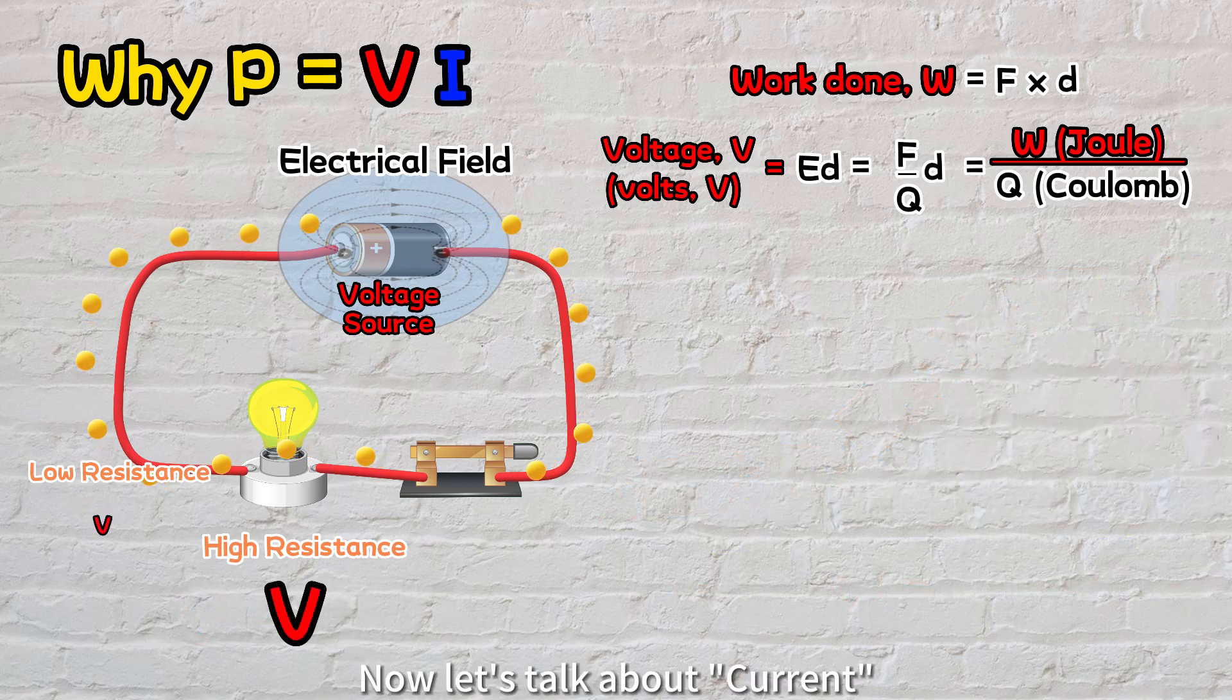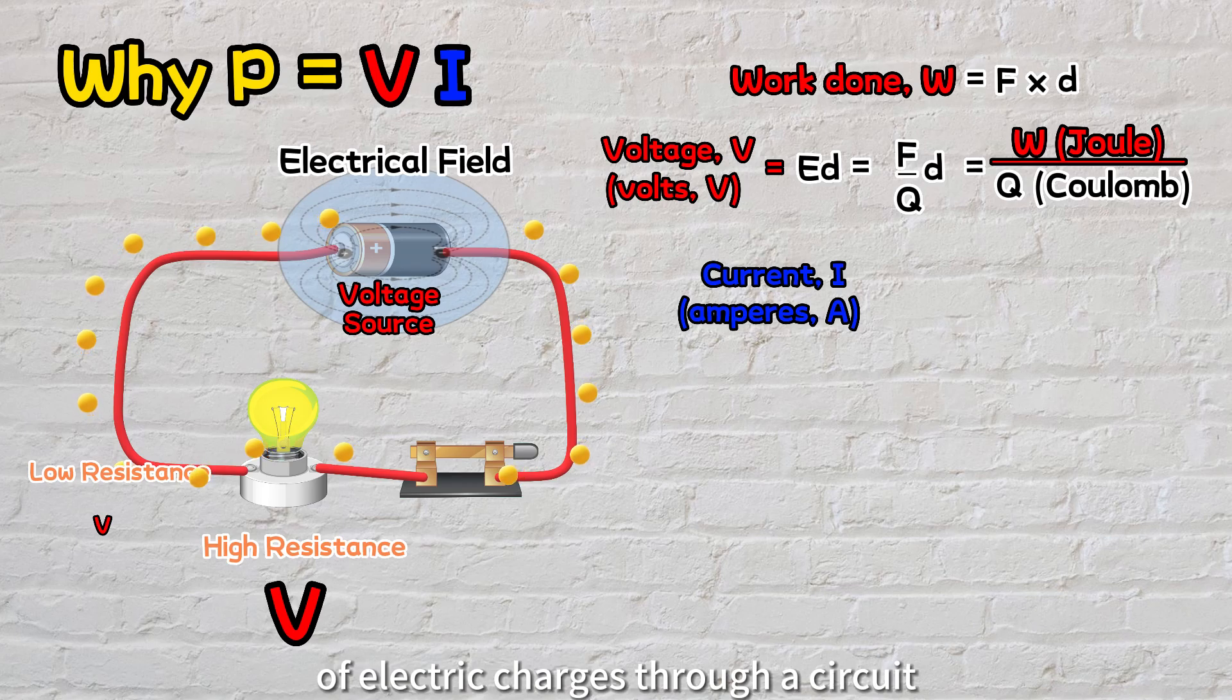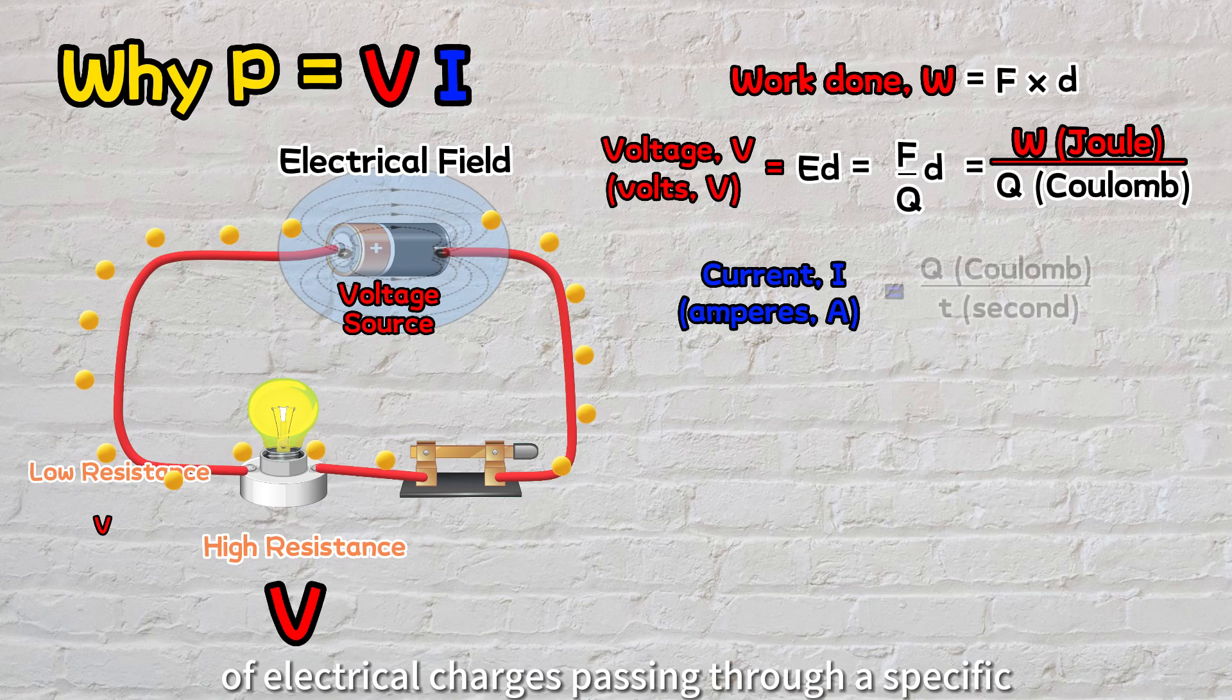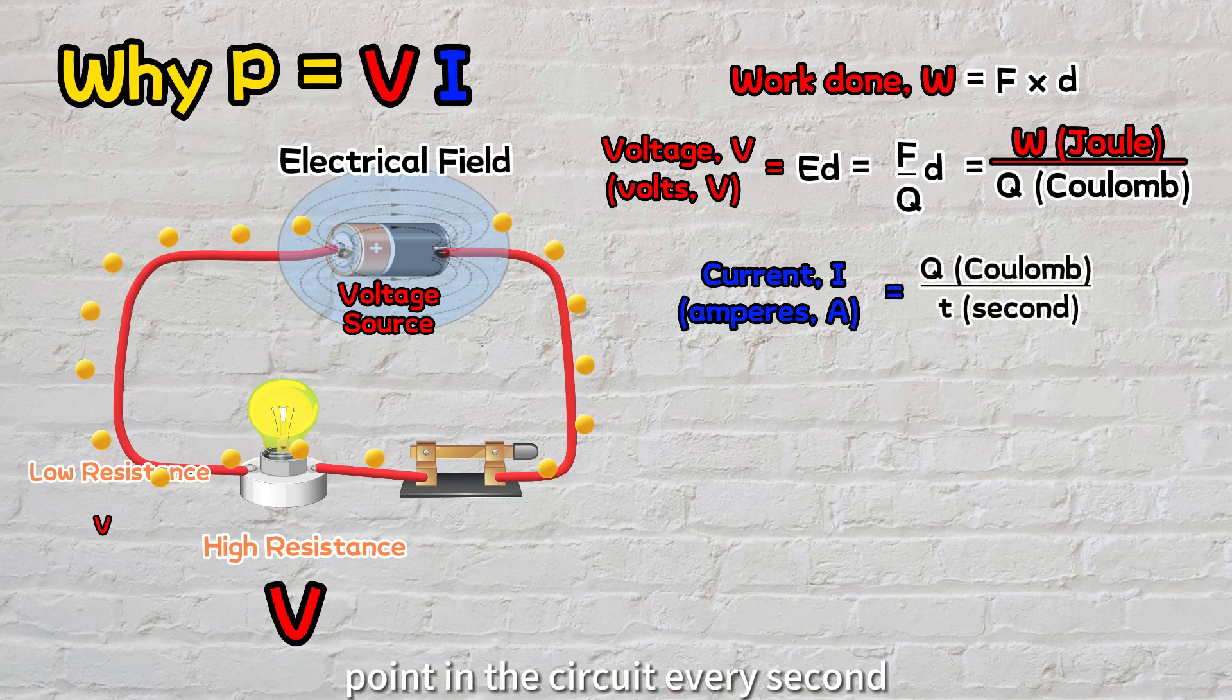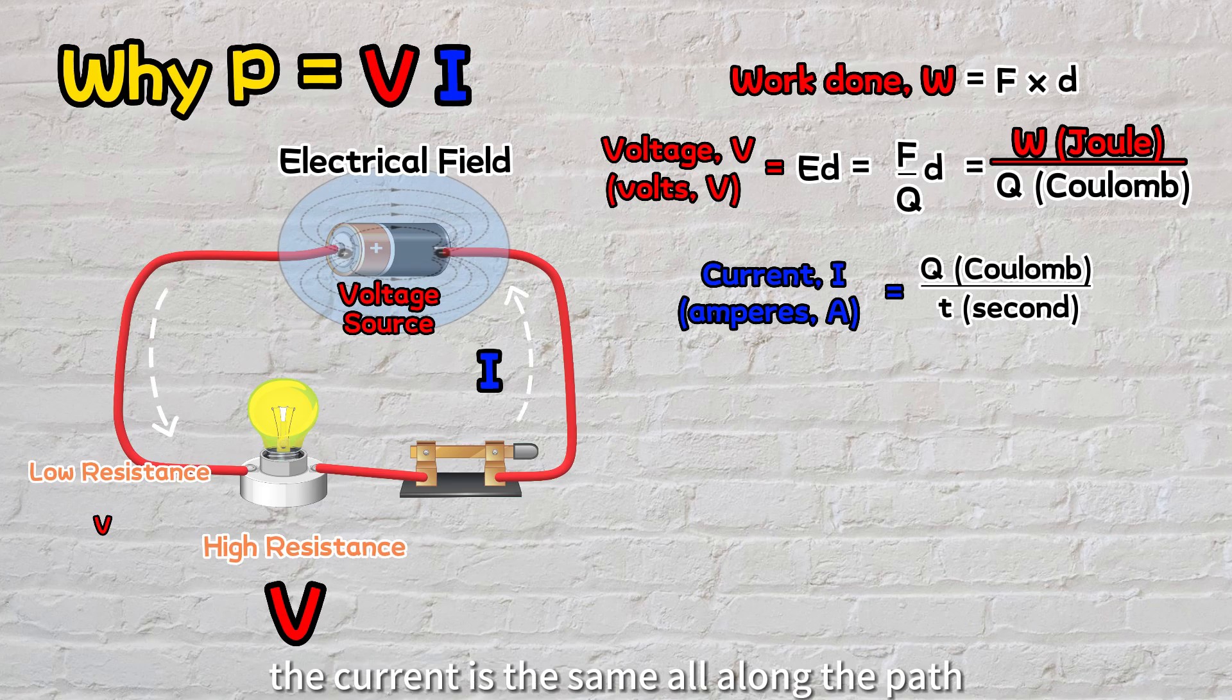Now let's talk about current. Current is the rate of flow of electric charges through a circuit. It represents the number of electrical charges passing through a specific point in the circuit every second, measured in coulombs per second or commonly known as ampere. In a series circuit, the current is the same all along the path.